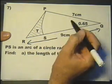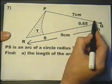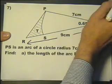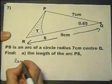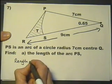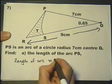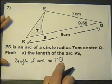So PS is the arc of a circle with Q as the center and radius 7. It's a large circle going all the way over the page. Because the angle is given to you in radians, you're expected to know this formula which works out the length of an arc in radians.